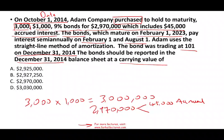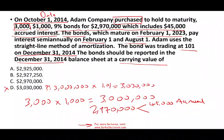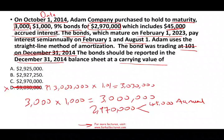Which two answer choices can you eliminate immediately? First, eliminate D, because D gives the market value of the bond — 3 million trading at 101 equals $3,030,000 fair market value. But since the bonds are held to maturity, the market value is irrelevant, so the bond trading at 101 is a trick. Also eliminate the answer showing $2,970,000, because that is the total amount paid and includes $45,000 of accrued interest — it cannot be the carrying value of the bond itself.